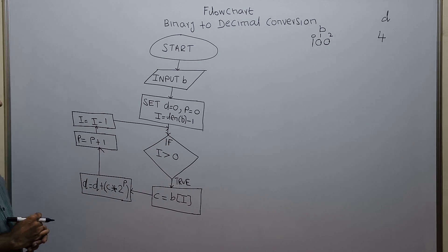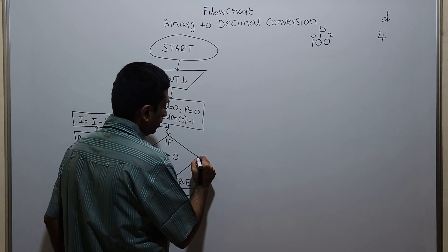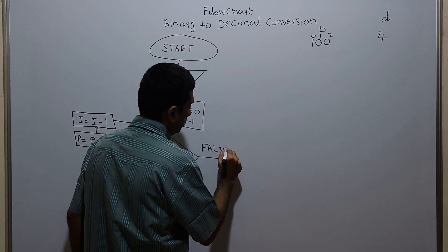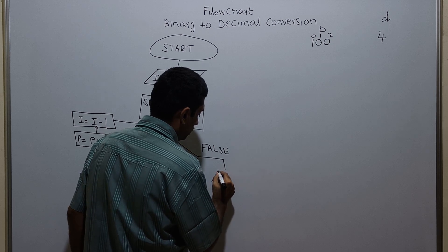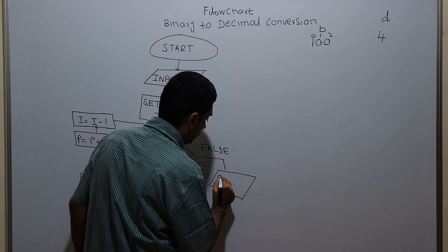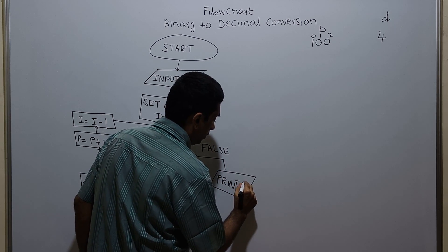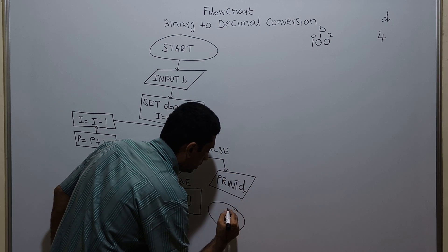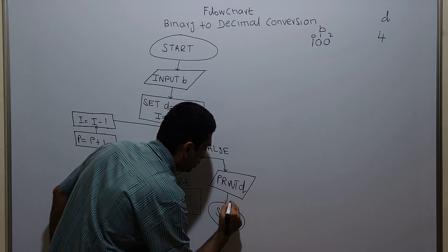This will go like a loop until I greater than 0 is false. In such a case, I am printing D — the value stored in variable D. And this is the logical end of the flowchart.